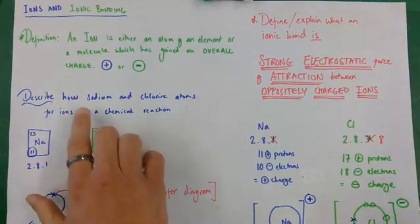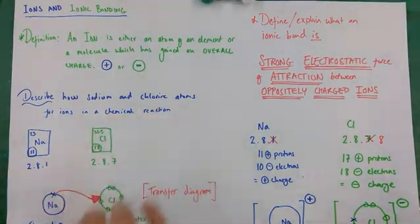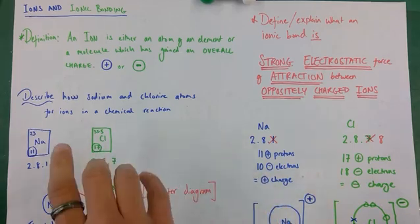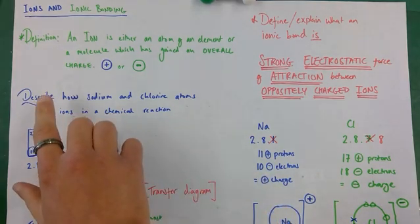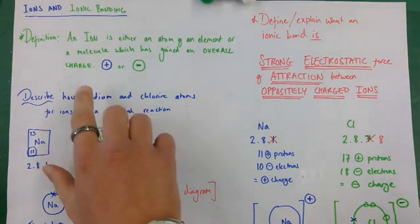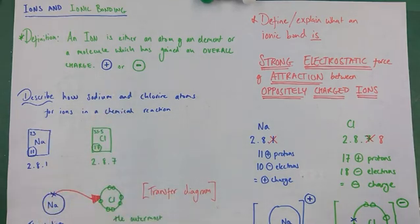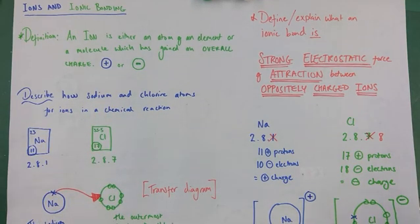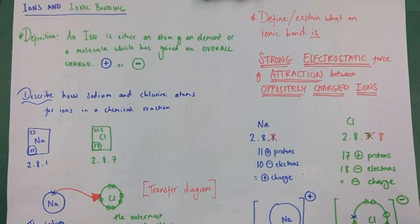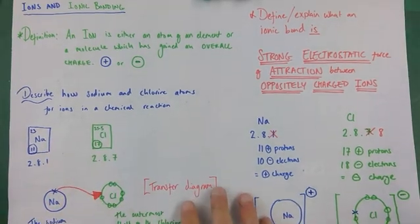The first thing you might be asked to do is describe how ions actually form. When asked to describe how ions form - for example, describe how sodium and chlorine atoms become ions in a chemical reaction - that is asking you about the transfer of electrons and to explain exactly how many electrons have been transferred from one atom to the other.